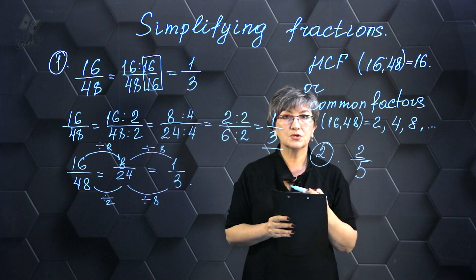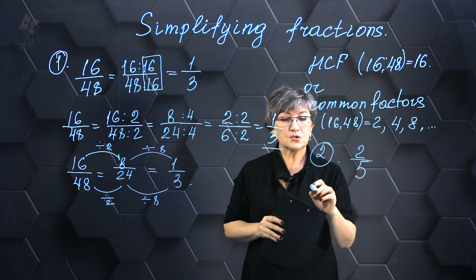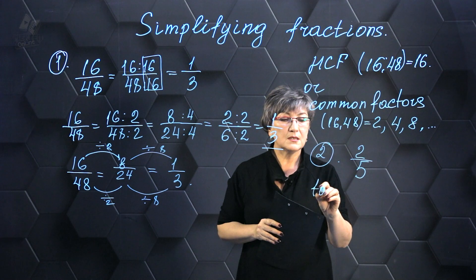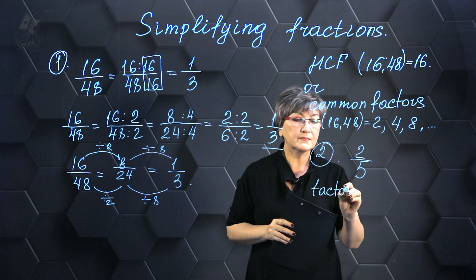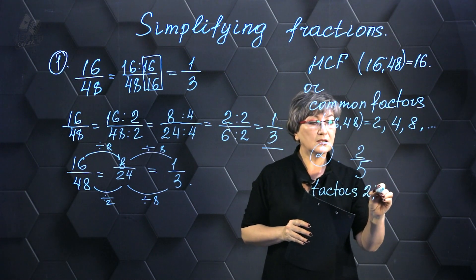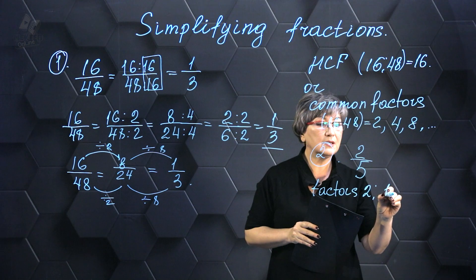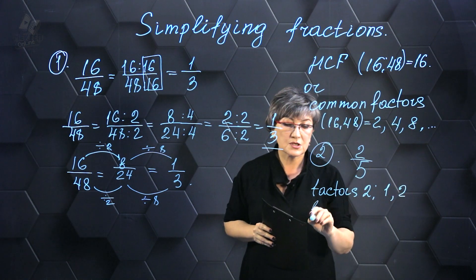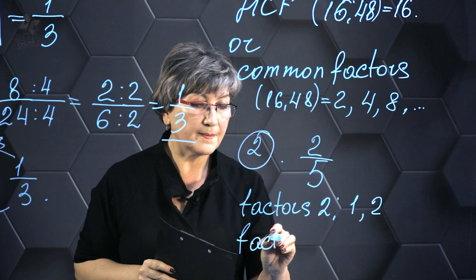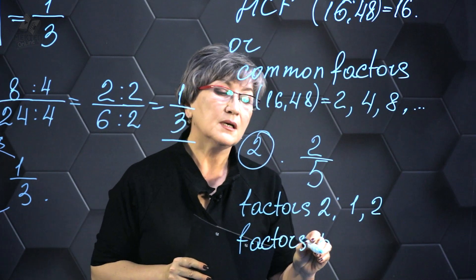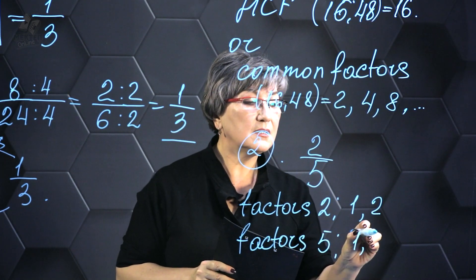What course of action should be taken in this particular case? The issue at hand is that the divisors of the number 2 are only 1 and 2, without any additional factors. The numbers that evenly divide the number 5 are 1 and 5. These are the divisors of the number 5.